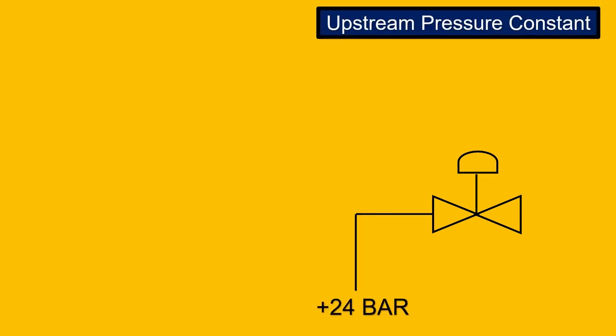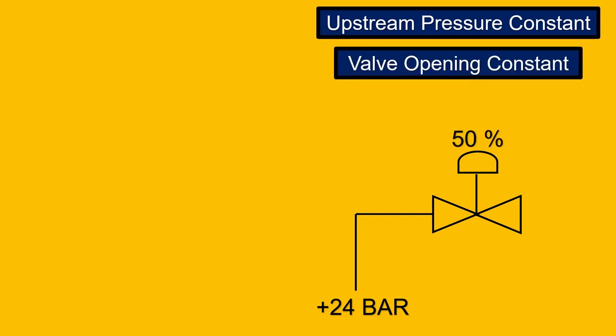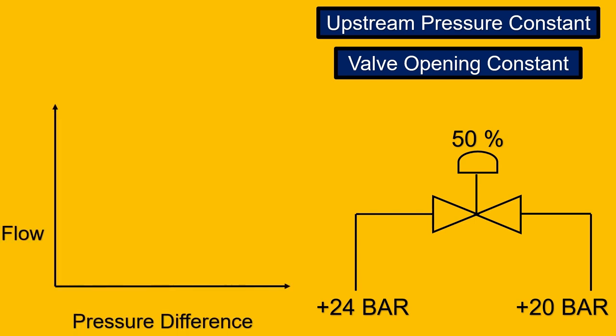Now, if you have to understand this concept we can say that if we have a valve and we keep the upstream pressure is 24 bar so we keep a constant upstream pressure and the valve opening is kept constant. For example, let's say 50 percentage and we keep increasing or decreasing the downstream pressure like example 20 bar, 19 bar, 18 bar and we try to plot a graph we will be getting a linear characteristics.